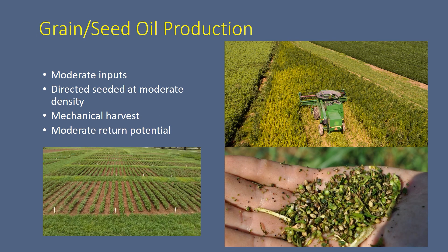When we're growing hemp for grain or seed oil production we do need more moderate inputs. We're going to seed it at a little less rate than we did for fiber, and we're going to need more fertilizer inputs much like we would for corn or soybeans because we're producing grain. We do have the opportunity to mechanically harvest it. Our potential returns are maybe not where we would like to see them but we think that will get better as we move forward. Dr. Bob Pierce here at the University of Kentucky is working with a group near Louisville on grain production, and we're going to be doing some research on that with farmers over near the Louisville area.